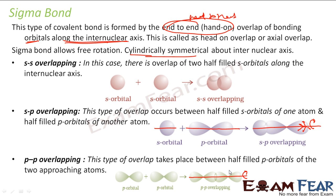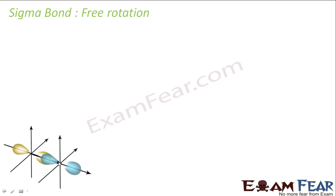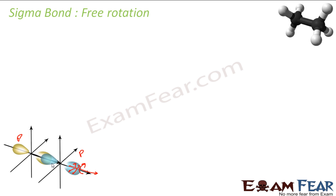The sigma bond allows free rotation. Let us take this free rotation thing using the three-dimensional shape of the P orbital. P orbital overlaps with P orbital. If you see, this is my internuclear axis and everything is symmetric along this axis — all these points are symmetric. This is the P orbital head-on overlap.